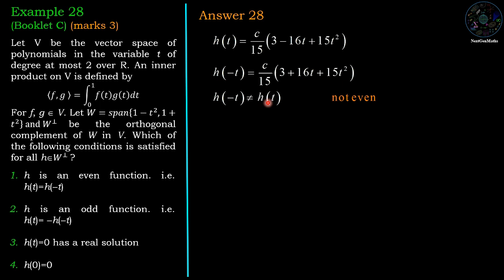But which is not equal to h(t), therefore h(t) is not an even function, and which is the first option, so first option is wrong. Which is also not equal to minus times h(t), therefore it is not an odd function, so second option is also wrong.